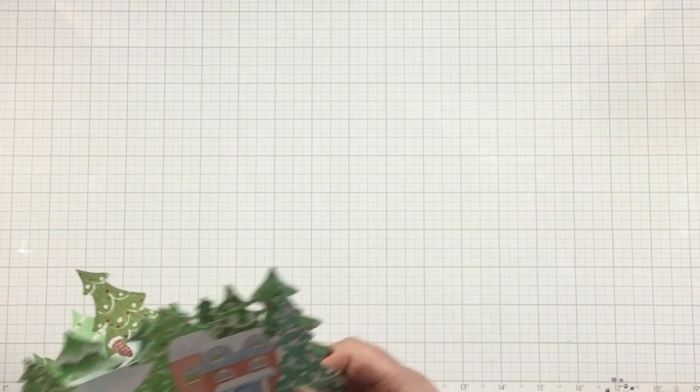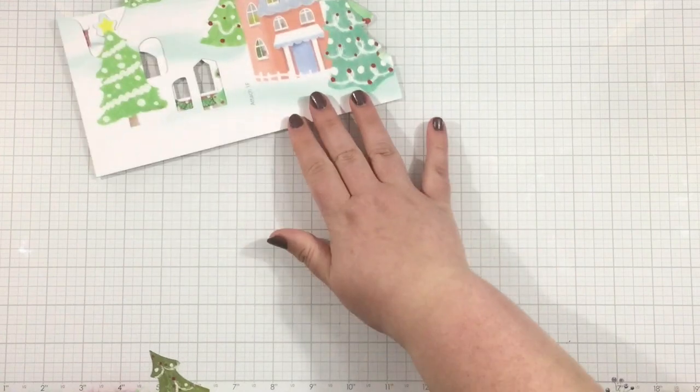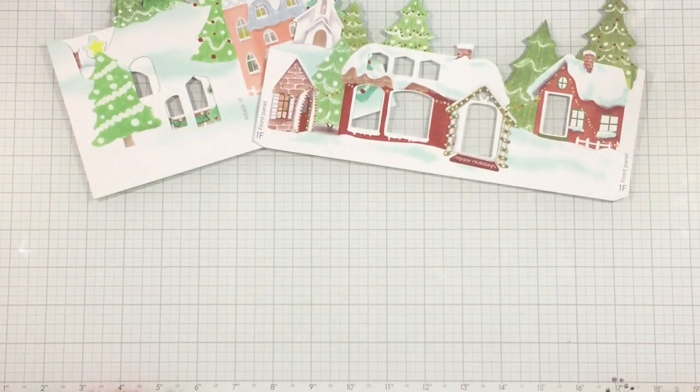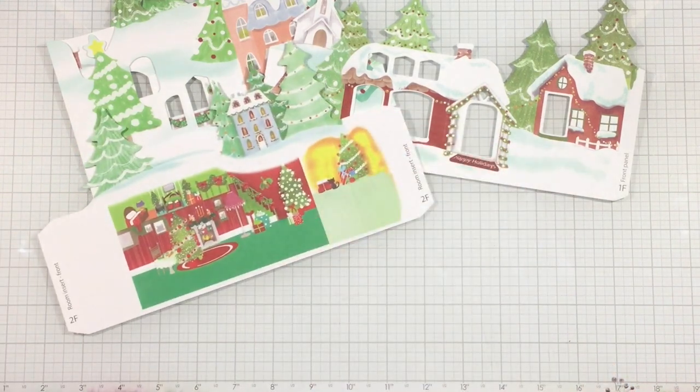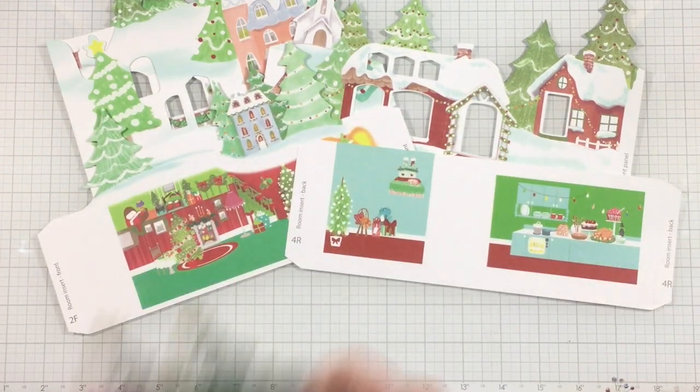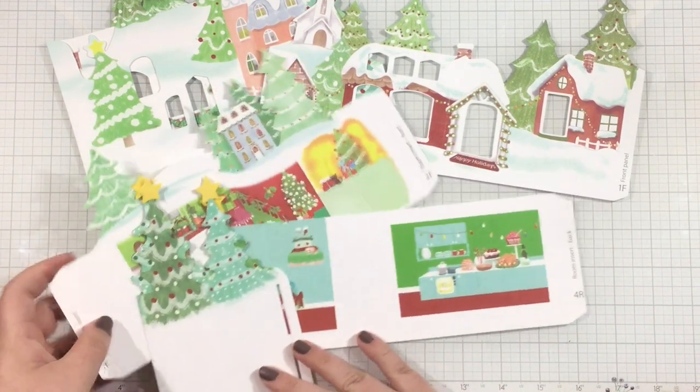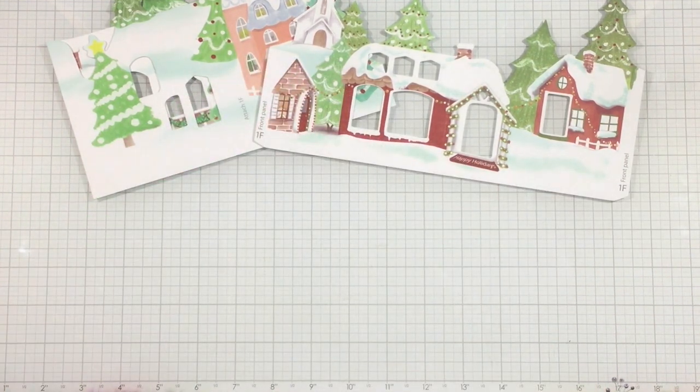Alright, so I'm going to bring in the five panels that you will need to build this card. You'll need your back panel 1R, a front panel 1F, a room insert 2F, a room insert 4R, and then that last piece is the tree insert. You'll need one of each of these five pieces.